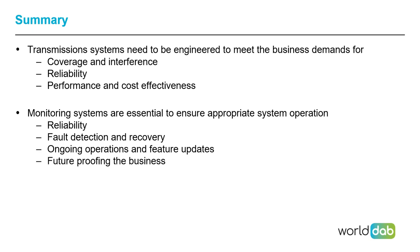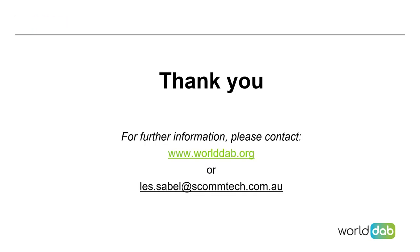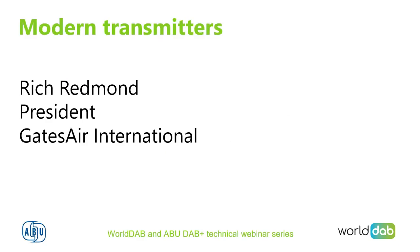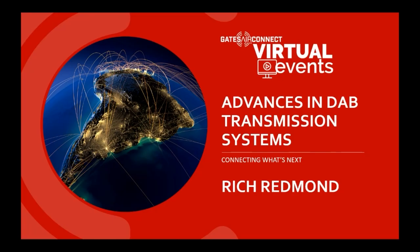Take the time to do the design correctly — it will save money in the long term, particularly for coverage. Use modern tools for coverage to get the right-sized transmitter, not oversized or undersized. We need monitoring systems to ensure appropriate reliability, detect faults, recover from them, and update features to future-proof your business. I'm now going to move on to Rich Redman, president of Gates Air International, who will present a video about modern DAB transmitters — how they're constructed, what they can do, and some of the newer models coming out, particularly for repeaters.